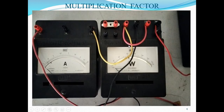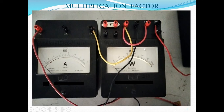Here is another example. Suppose I have connected this watt meter for 300 volt range. M and C are externally shorted. The ammeter connected in series has two current ranges: 10 ampere and 5 ampere. For this connection with 5 ampere range, the multiplication factor equals 300 into 5 into 1, divided by 1500, which is 1500 divided by 1500, so 1 is the multiplication factor for this connection.